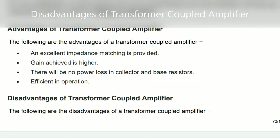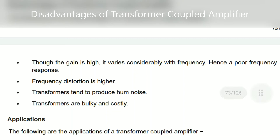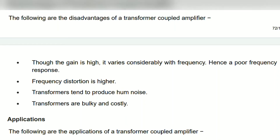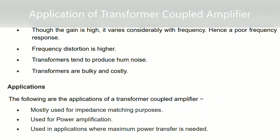There are also some disadvantages of transformer coupled amplifiers. First, although the gain is higher, it varies considerably with frequency. Second, frequency distortion is higher. Third, transformers tend to produce hum noises through internal circuit interactions. Fourth, transformers are bulky and costly, making the circuit larger and more expensive.